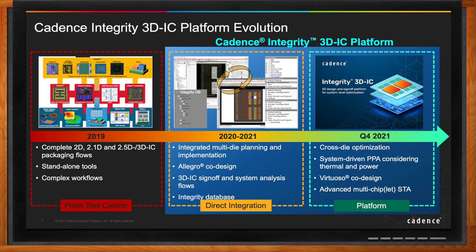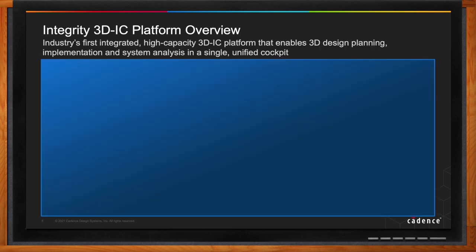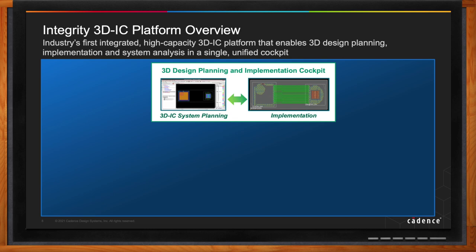The Integrity 3D IC platform has a lot of things. The first piece is the design planning and implementation cockpit. There's a system planner where you can plan the whole system, do different configurations, flip the face of the dies around or change the way you stack them on top of each other, and then implement each die in that system.